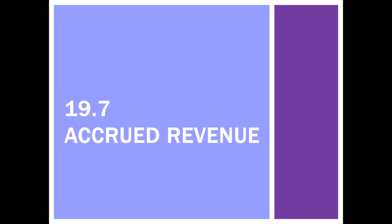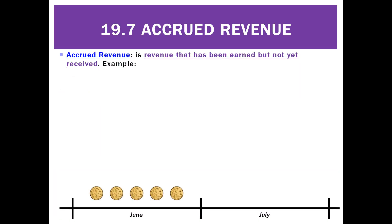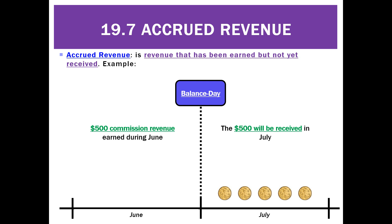As well as prepaid revenue, we can also have accrued revenue — that is revenue that we have earned but not yet received. For example, in June we have earned a $500 commission from one of our suppliers for selling their goods. Because it takes a while for the supplier to calculate how much they owe us, we probably won't receive that amount until July. But at balance day, the end of June, we've got a $500 commission that we haven't actually received yet — it's been earned but not yet received.